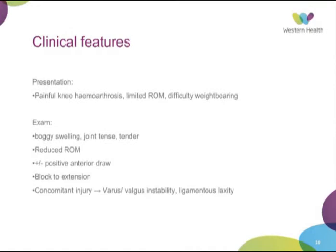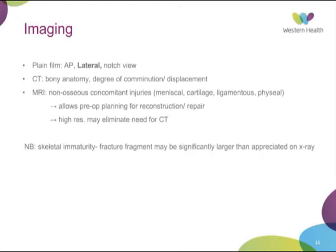For imaging and workup: plain films — AP, lateral, and notch view. The lateral is the most important as it shows displacement and size of the fragment. CT is useful for bony anatomy and determining the degree of comminution and displacement, helping guide management. MRI is useful for non-osseous associated injuries — the ACL, musculoskeletal injuries — and for looking at the physis in these skeletally immature patients, allowing preoperative planning. Some authors suggest high-resolution MRI may eliminate the need for CT, which has a high radiation dose in children.